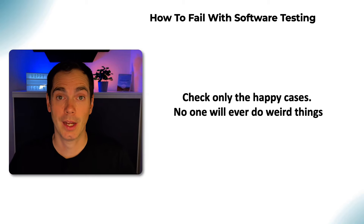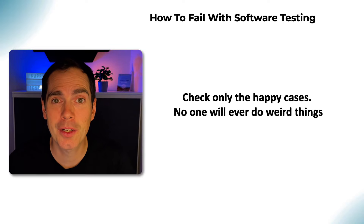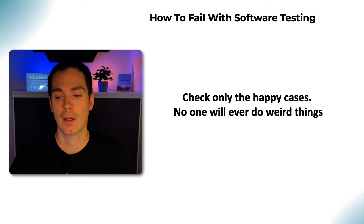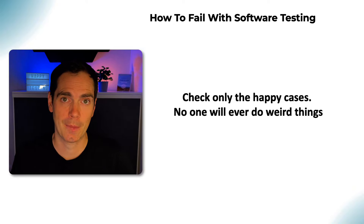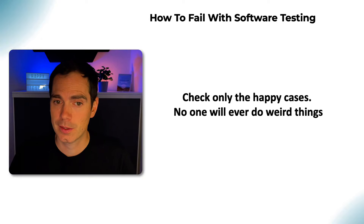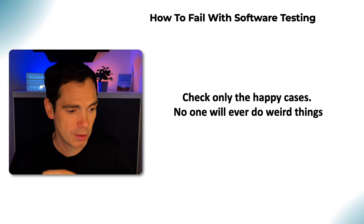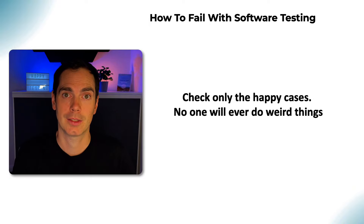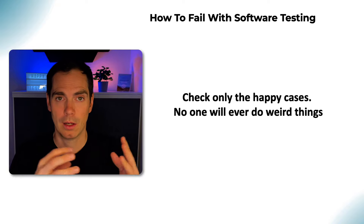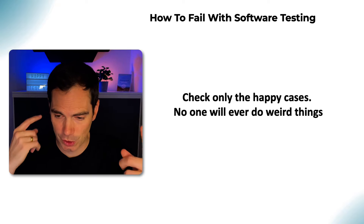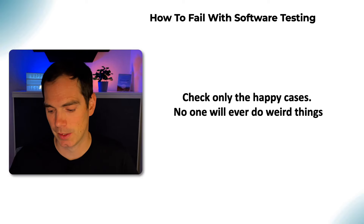Check only the happy cases — no one will ever do weird things, right? That's an edge case. We've heard it thousands of times. If you only check for the happy cases, you will fail. The moment a user hits the system in production, they will do something weird — the system crashes, a weird error message shows up. So think of edge cases and workarounds while planning your testing activities.